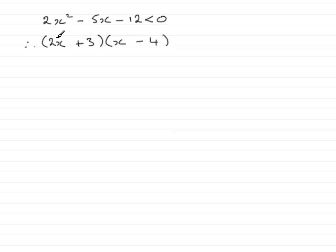When you multiply that out, you'll see you get your 2x squared minus 4x plus 3x, which is minus 5x, and then minus 12 from 3 times minus 4. And that's going to be less than 0.